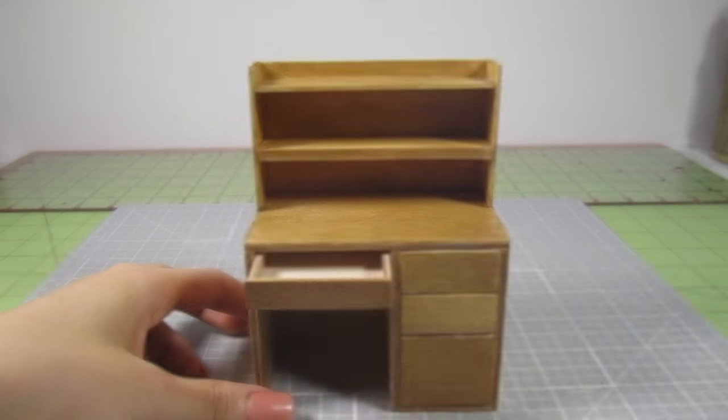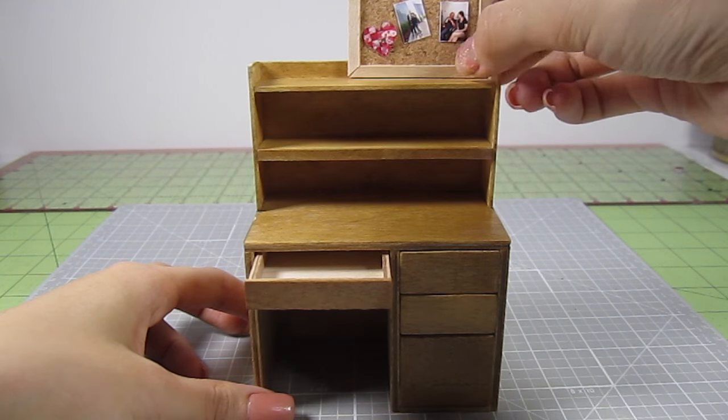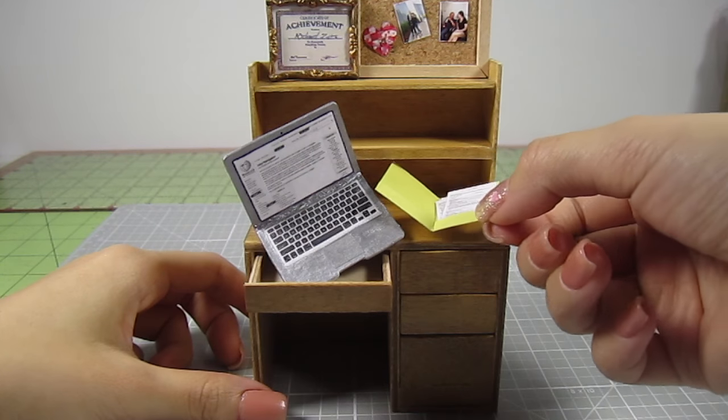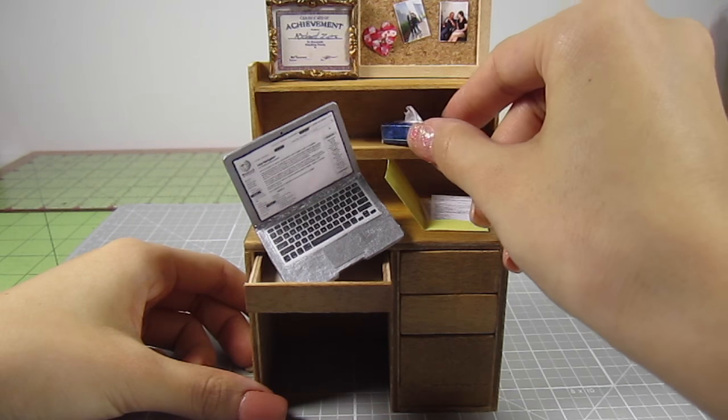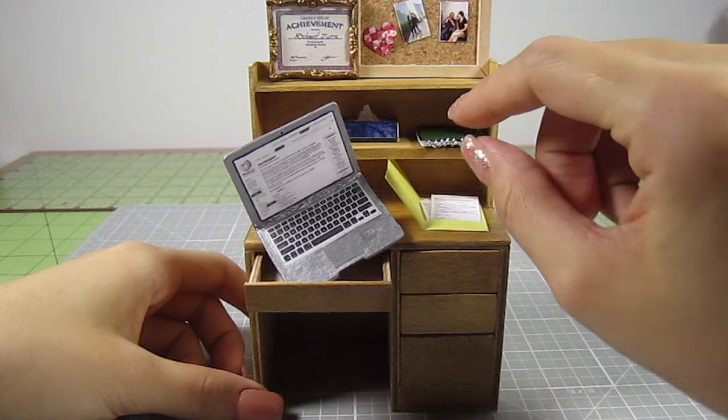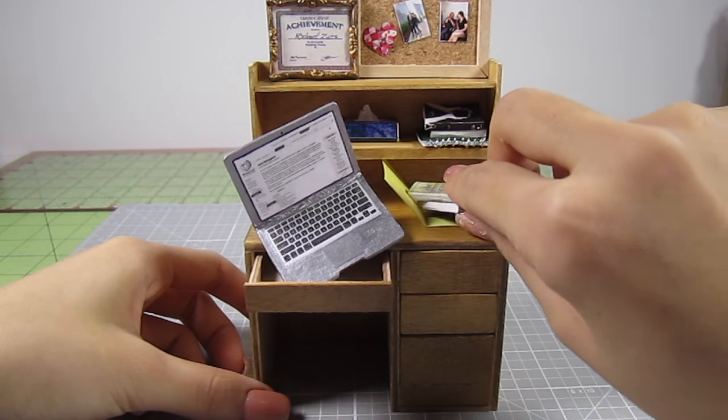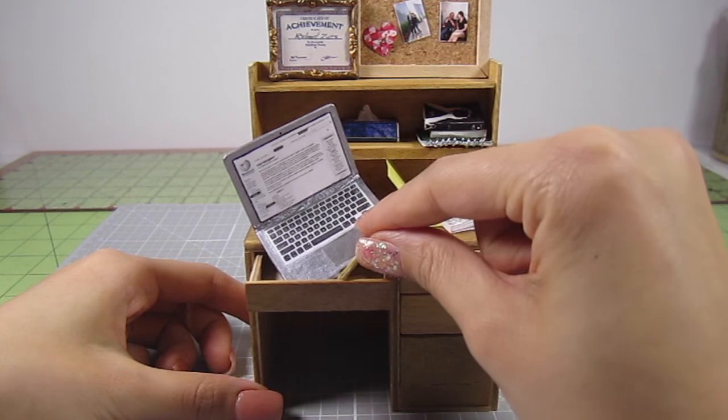And that's it guys! The miniature dorm desk is all complete. Just add a bunch of trinkets to make it look super messy and your desk will look like any real dorm desk. If you like the miniature laptop, folder, post-it notes, and bulletin board that I have on this desk, I'll show you how to make that in the next video. I already have videos of all the other trinkets so make sure to check those out.